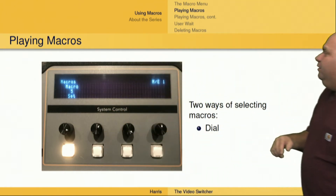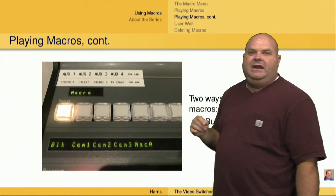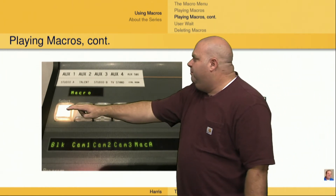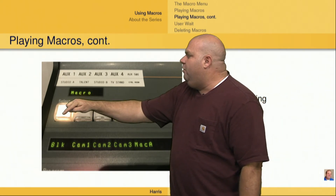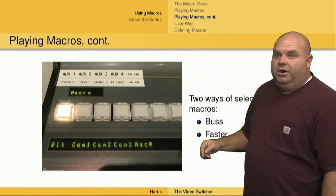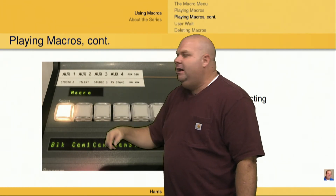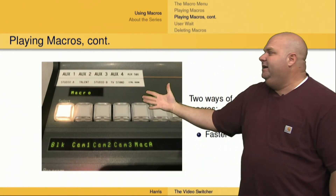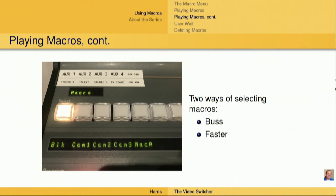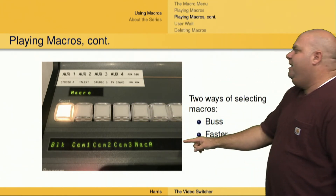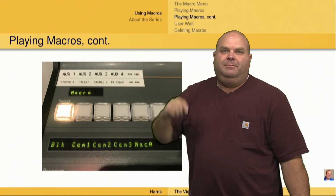Once we have the macro selected, alternatively we can use the key bus. This is the key bus right here — you'll notice we're in macro mode. This then becomes macro one, macro two, three, four, five, and so forth. If we have recall and run selected on the macro menu, as soon as I push that button, it's going to bring up macro one and immediately start playing that macro and executing all the tasks. This method of choosing using this bus is much faster — it's going to be a lot faster than rotating a dial and then pushing the play button.